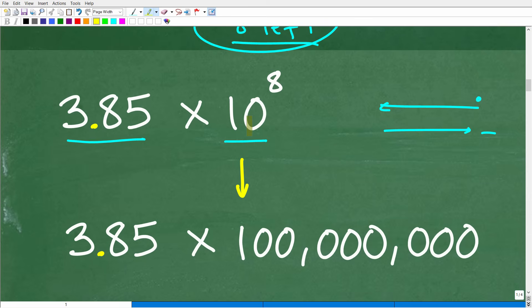So 3.85 times 10 to the eighth power is the same thing as 385 million. And just in case you were like, are you sure about that? Well, take 10 and multiply it by itself eight times. If you do that, you will get 100 million. So instead of writing 100 million, let's just write 10 to the eighth power. So the 100 million times 3.85, we'll get back to that 385 million. So just a quick example of scientific notation.